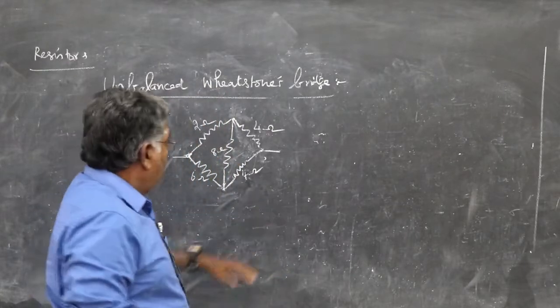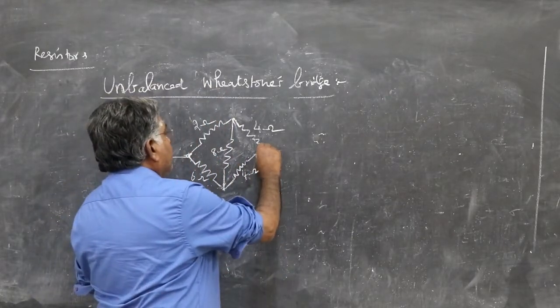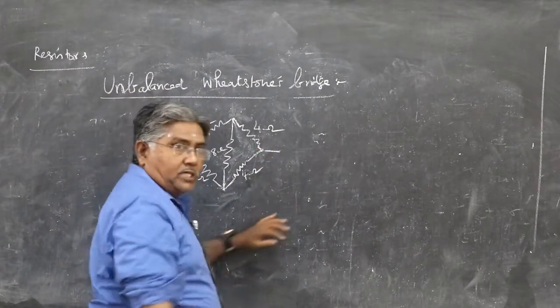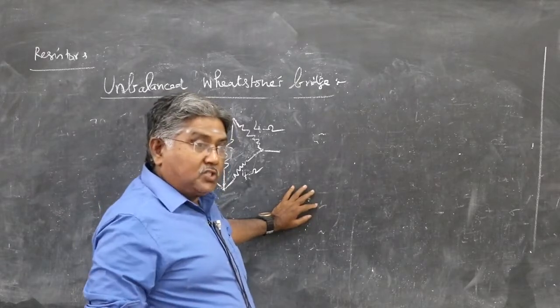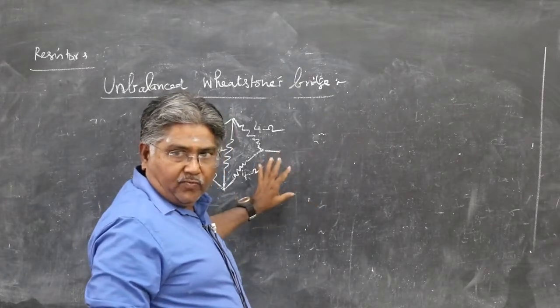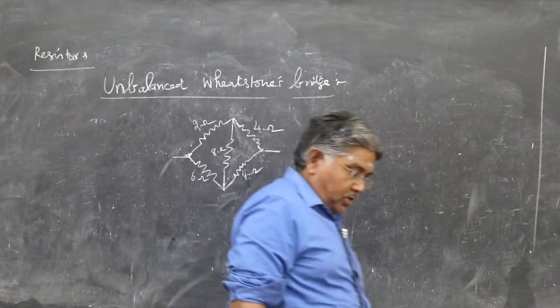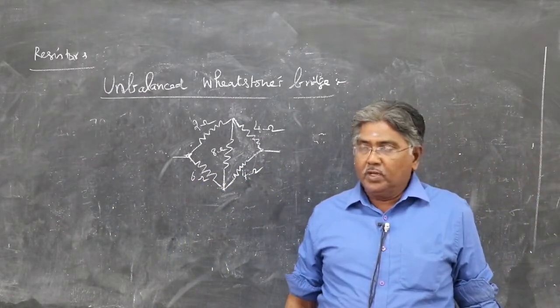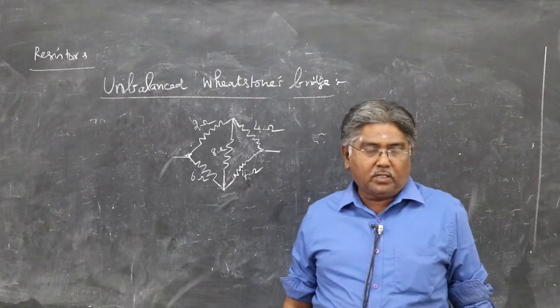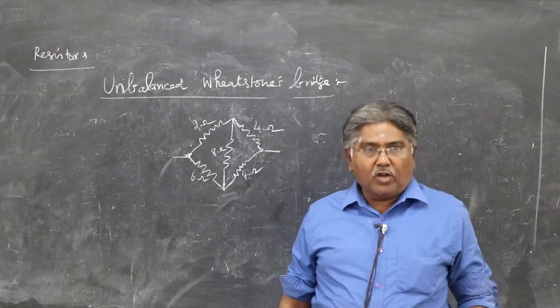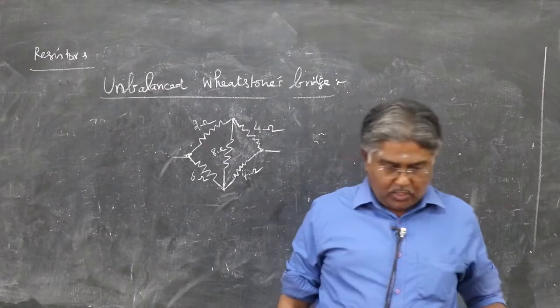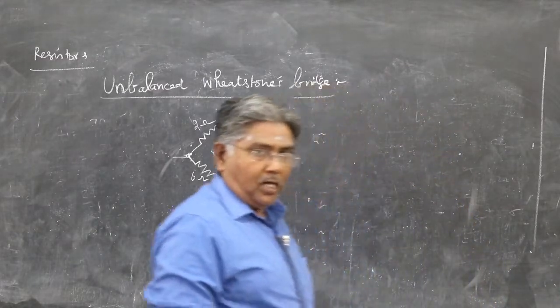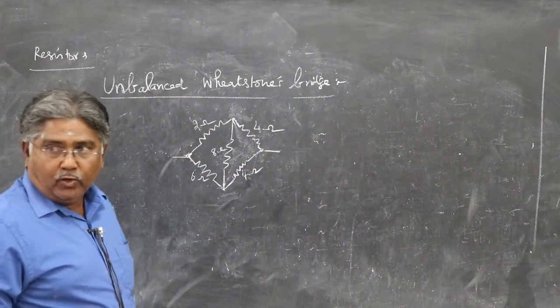Now we can see how to use star to delta conversion for this unbalanced Wheatstone Bridge. Already we have seen delta to star transformation. Now we can see how to convert that star form or Y form into a delta network and use it here.